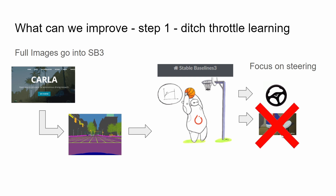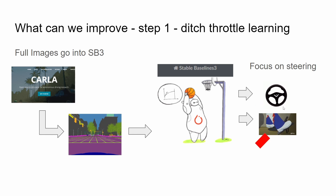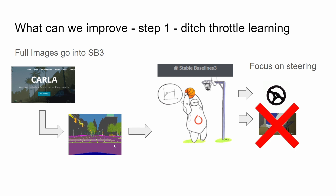A couple of key changes. First, I'm getting rid of throttle prediction. I'm having the car driven at a constant speed using simple programmatic configuration — increase throttle if it's below a certain speed, reduce throttle if it's above it. That's simple logic, not controlled by any neural network or reinforcement learning; it's just handled programmatically within the simulator. I'm only asking RL to give me the steering output — to learn how to control steering to avoid crashing and actually get somewhere within the simulation.